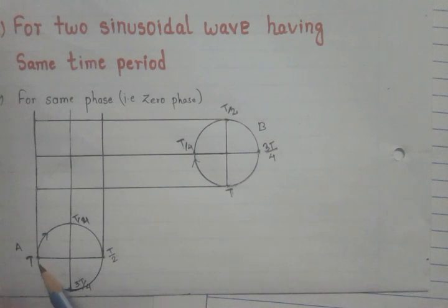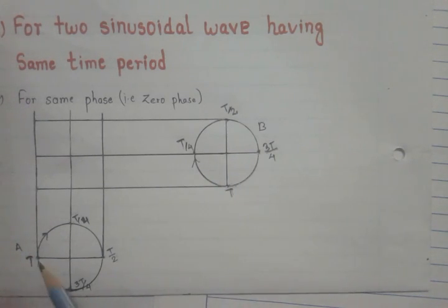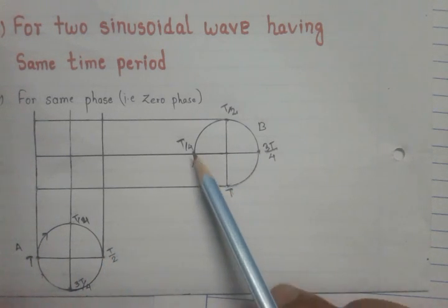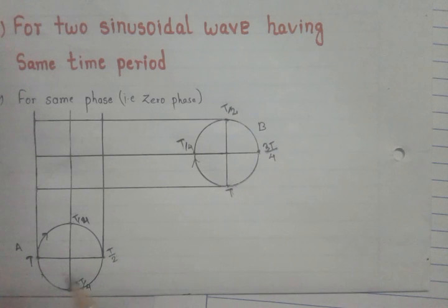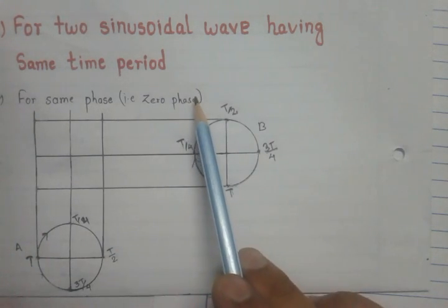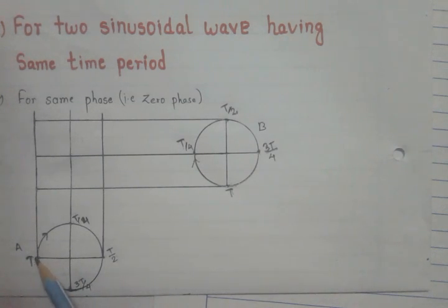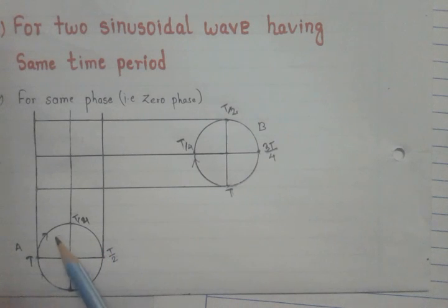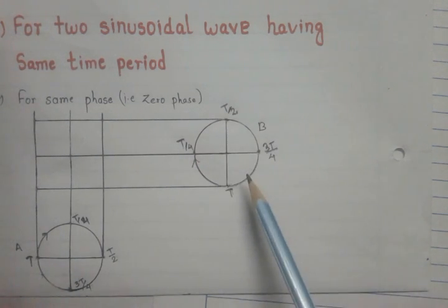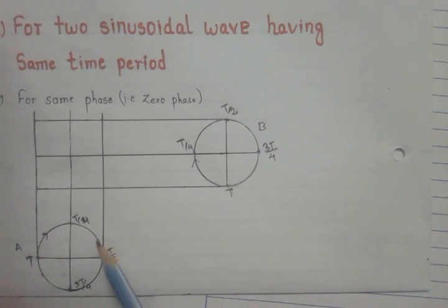That means the amplitude of the wave propagating in the x direction and the amplitude of the wave propagating in the y direction are equal. You can also make circles of different diameters to represent waves of different amplitudes. Now divide these two circles into four equal parts. For simplicity I have divided these two circles into four equal parts. From the condition of same time period, the time period for one complete circular distance for both circle A and circle B is the same, so you can write the time period for the wave propagating in the y direction also as T.